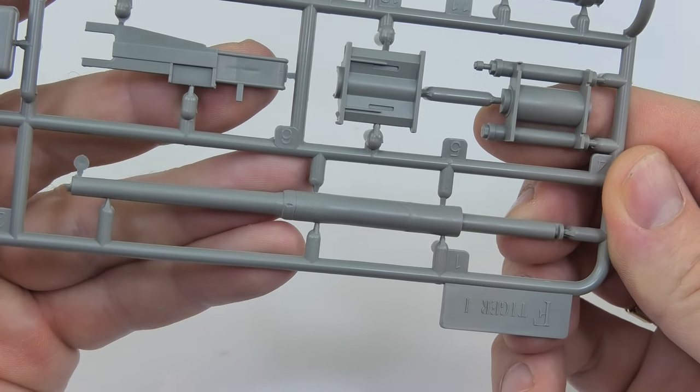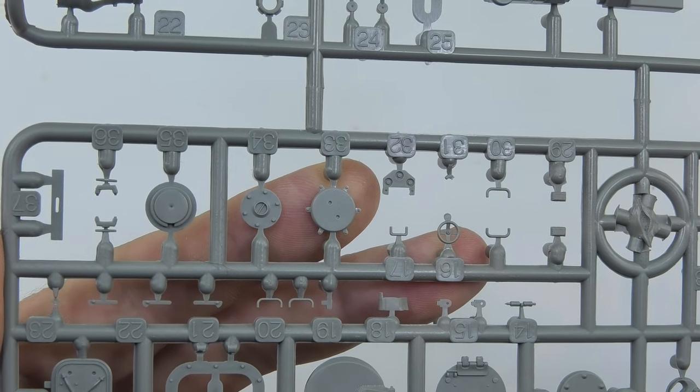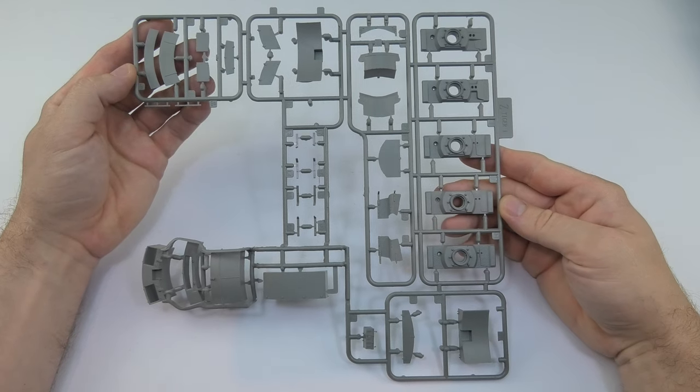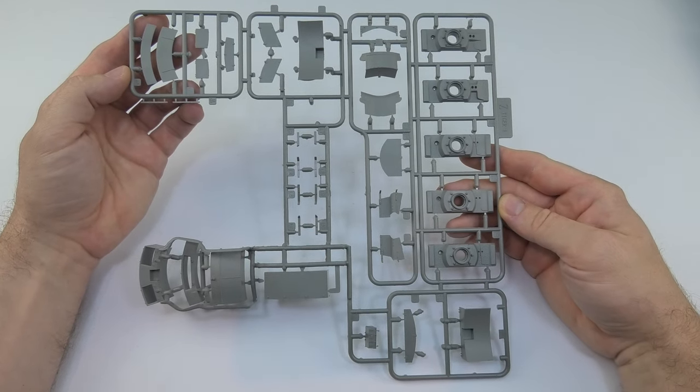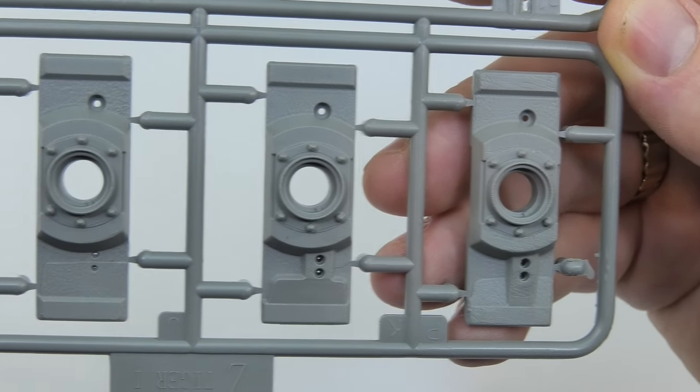The sprue with turret basket and gun mantlet offers several possibilities. This is a great solution and we will have elements that can be used in other Tiger projects. As you can see, the producer did his best and didn't spare on plastic.